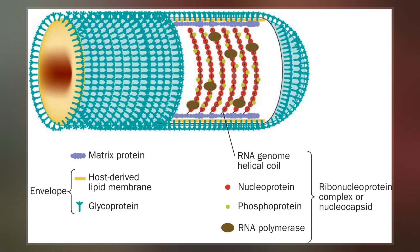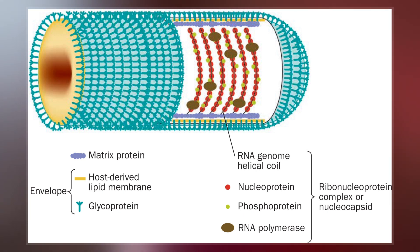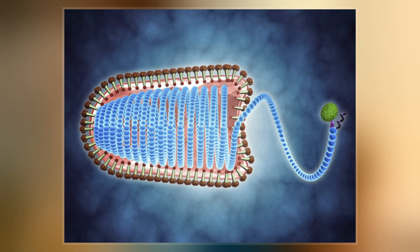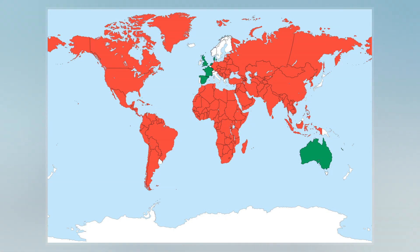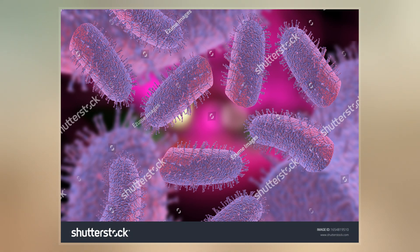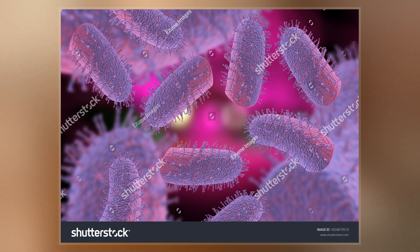Lyssavirions are enveloped with bullet-shaped geometries. These virions are about 75 nm wide and 180 nm long. Lyssavirions have helical symmetry, so their infectious particles are approximately cylindrical in shape. This is typical of plant-infecting viruses; virions of human-infecting viruses more commonly have cubic symmetry and take shapes approximating regular polyhedra.